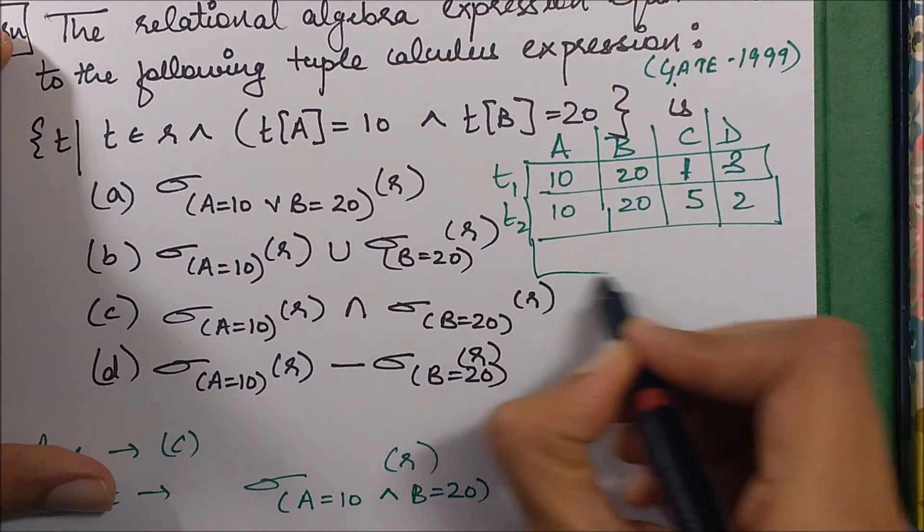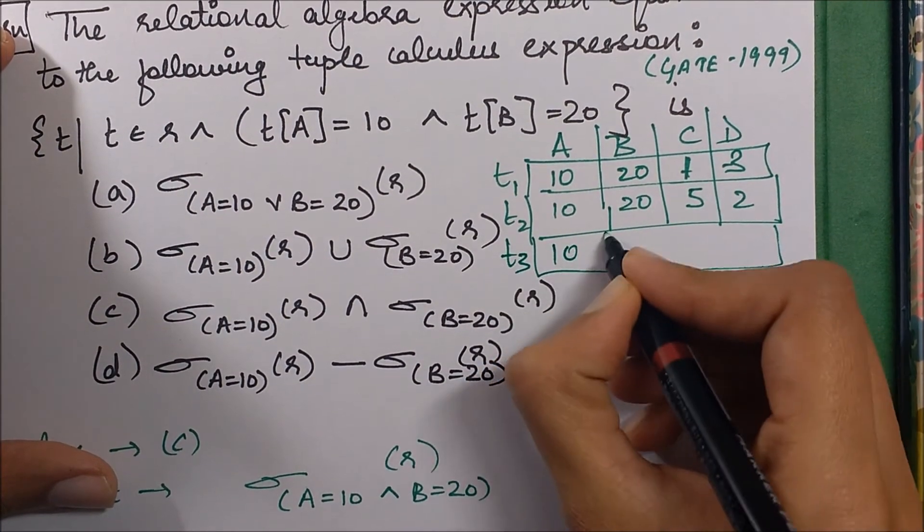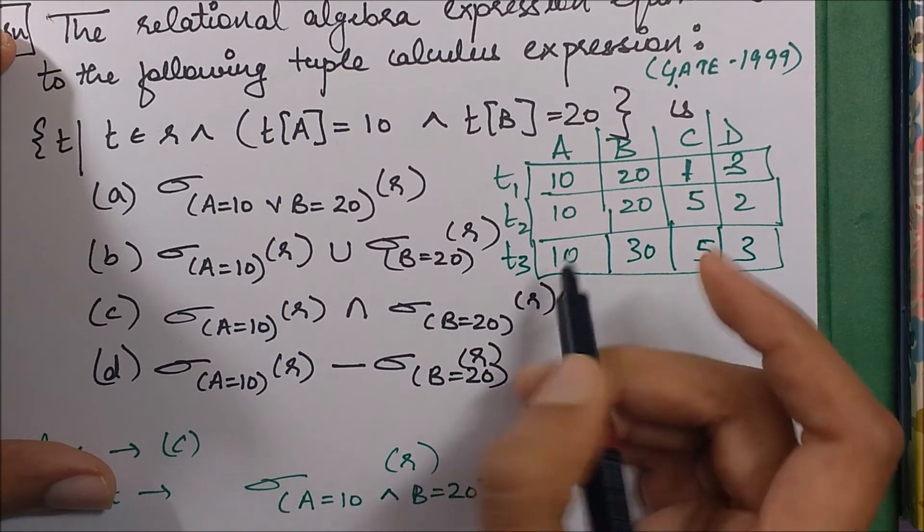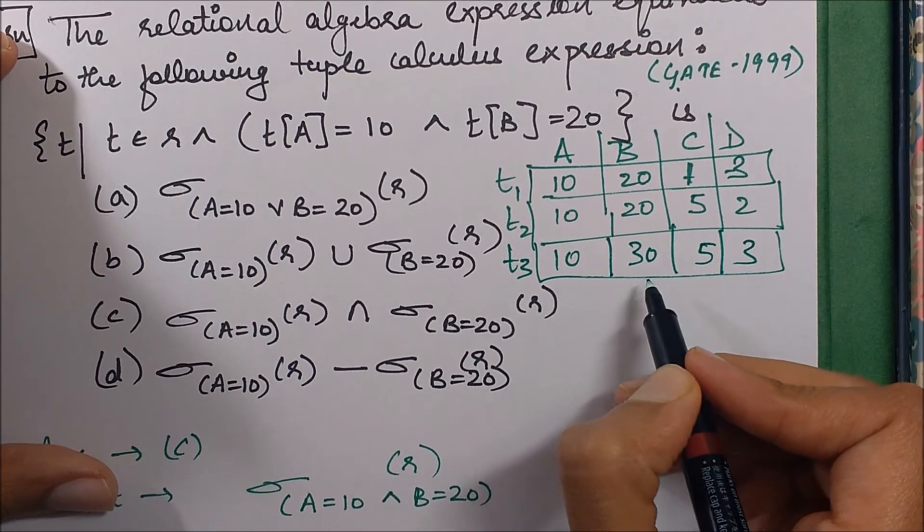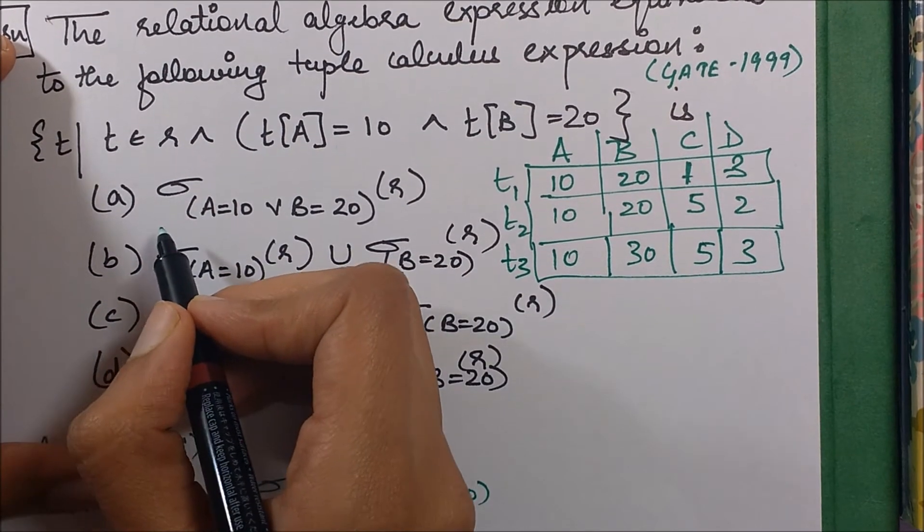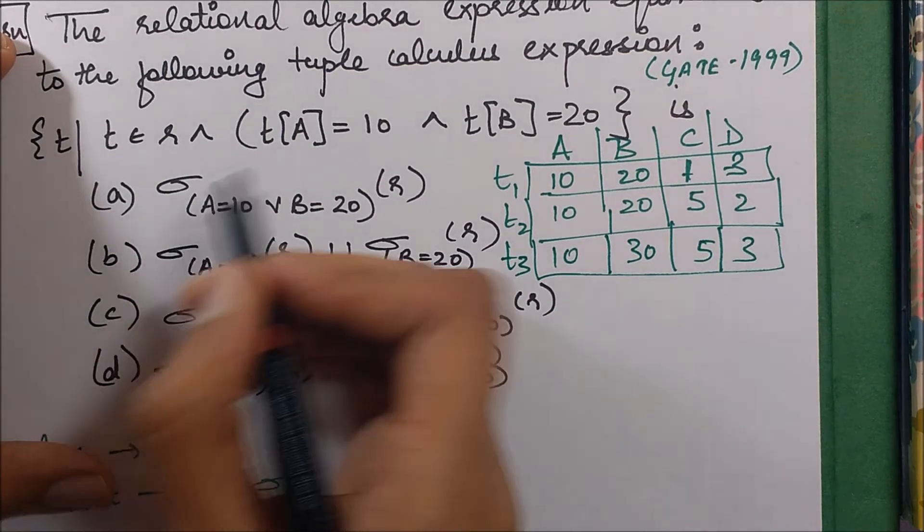Those tuples will also come which have a equals 10 but b is not 20. But since this is OR, this will satisfy and this tuple will also come. But we do not require this - we require the ones of this form. So this is not a possible answer.